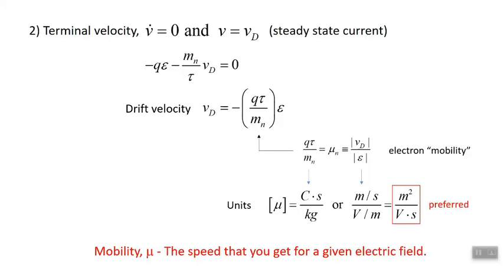We've introduced three quantities in this lecture: the mean scattering relaxation time tau, the electron mobility mu, and the drift velocity V drift. Those are three new quantities. They're very important. Read the first two sections of Chapter 2 as many times as you need in order to understand those quantities.